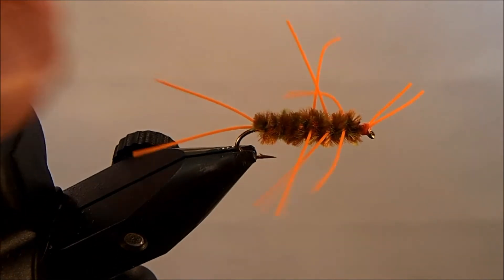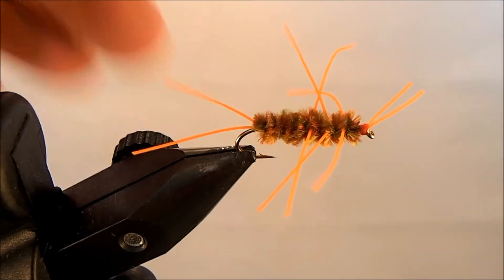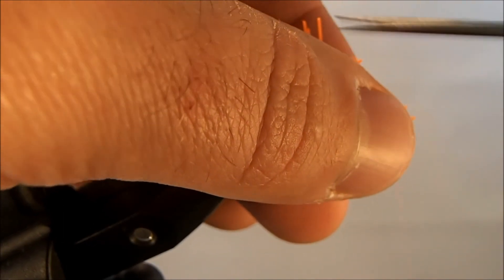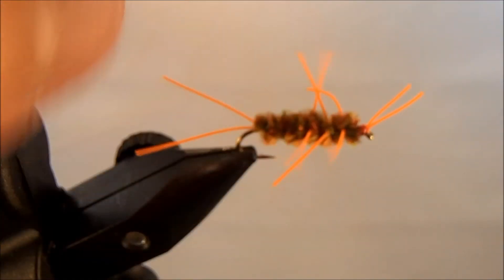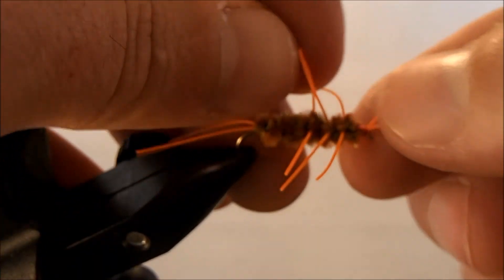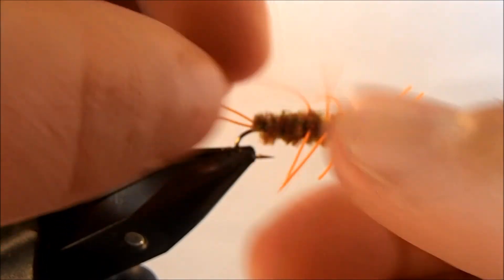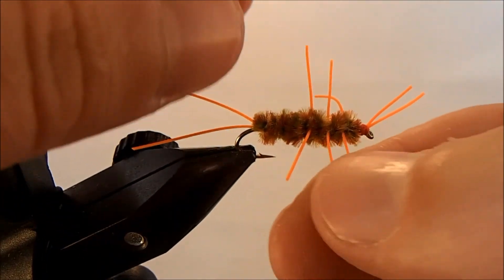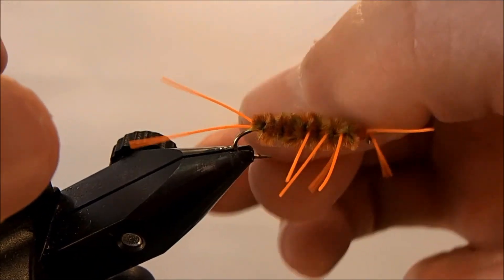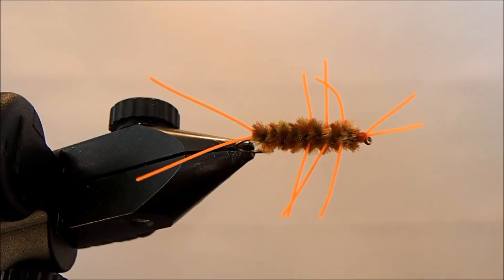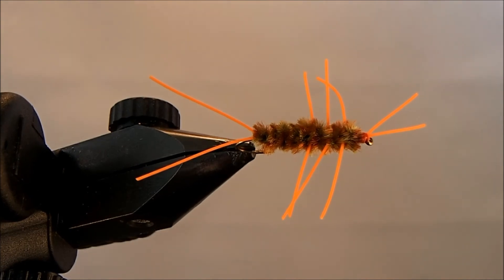Now I can come back through and trim up my legs, bring them just a little shorter. You can move those and situate those however you'd like. If you want to get real creative, you can put in an overhand knot to these legs and it'll give the legs almost a little joint. I'd just recommend that you do that before you tie them in. Make the overhand knot and then cut to length.